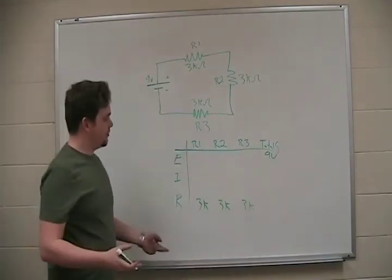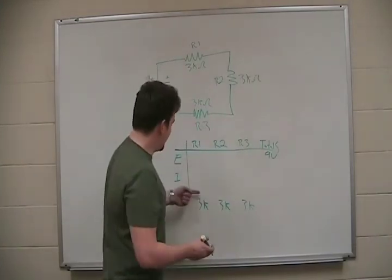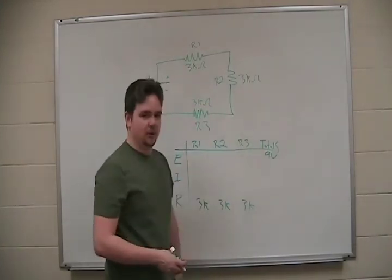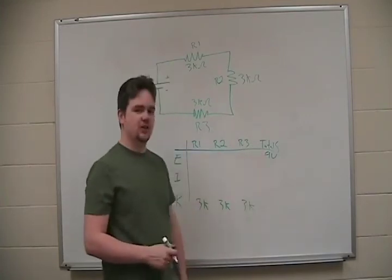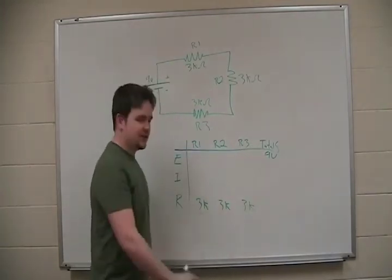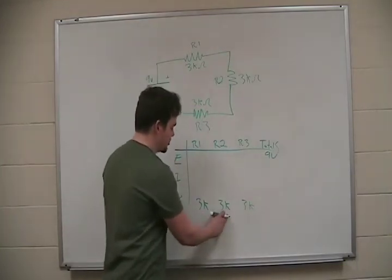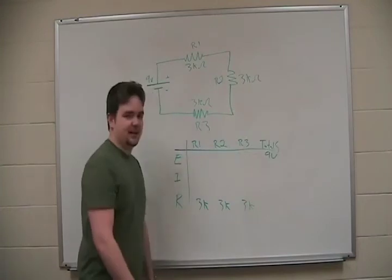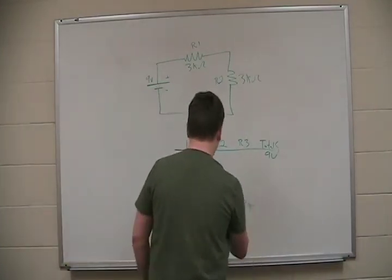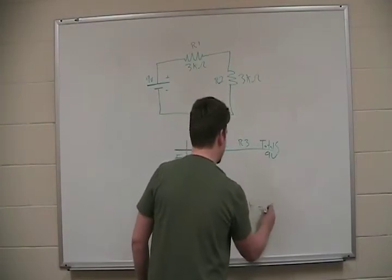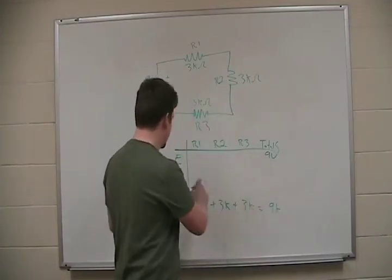So, the next step would be, we need two variables to start anywhere, right? And for every single one of these, we only have one variable. So, what do we do? We know what our total voltage is. We know that if it's a series circuit, we add all the resistances together, and we find the total resistance. So, 3K plus 3K plus 3K is 9K, 9,000 ohms. So, let's add that in. Great. So, now, we can find total current. And remember, I equals E over R.